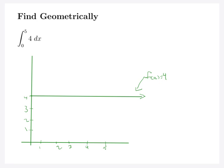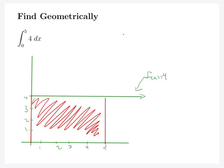We can find some of these things geometrically. For something like this constant function f(x) = 4, it's floating along horizontally. We're going to look from x = 0 up to x = 5. If we shade in this area, we can tell already that this is really just a rectangle. The area is length times width, which is five times four, so our area is 20.